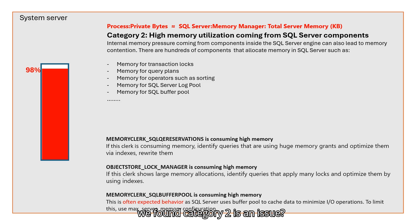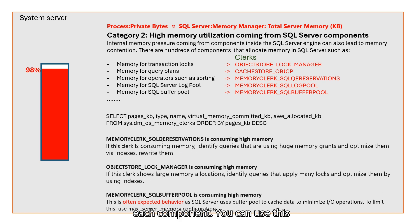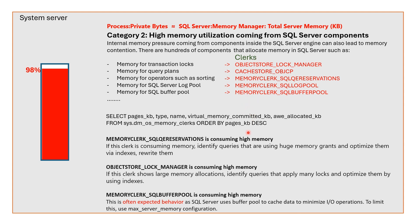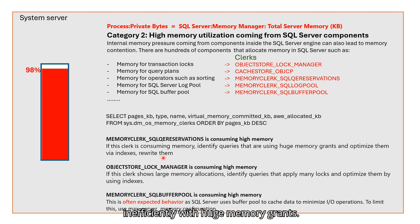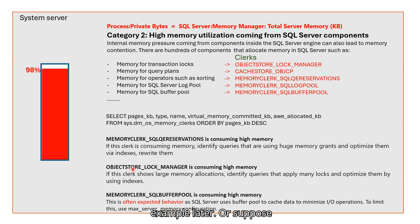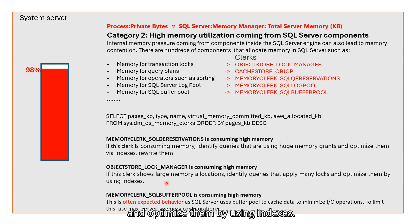Now, what if we found category 2 is the issue? Luckily, SQL Server offers clerks for each component. You can use a query to define which clerk and component is causing the issue. For example, if the memory clerk 'SQL Server reservations' is consuming high memory, this means that one or a few of your queries are being run inefficiently with huge memory grants — you should find these queries and try to optimize them. Or suppose the object store log manager is consuming high memory; you should identify queries that apply many logs and optimize them by using indexes.